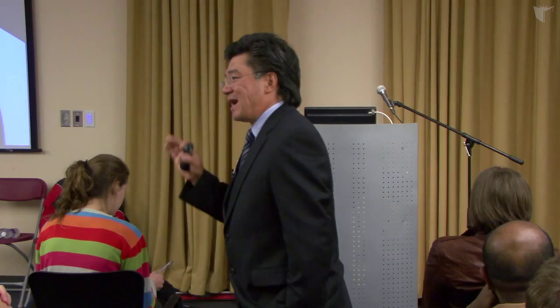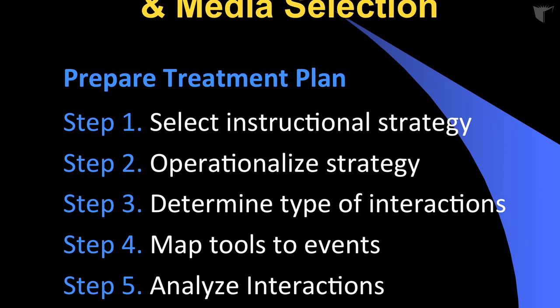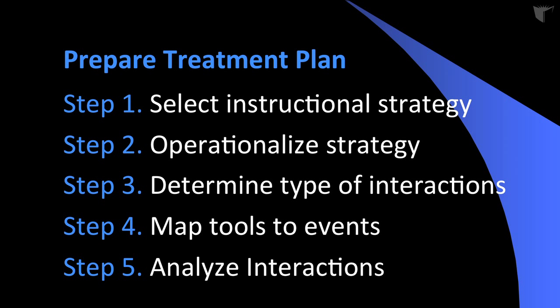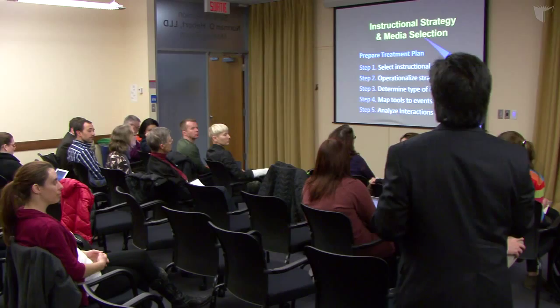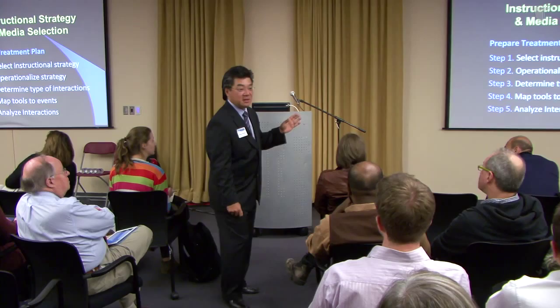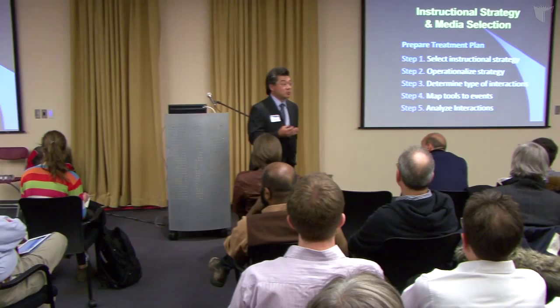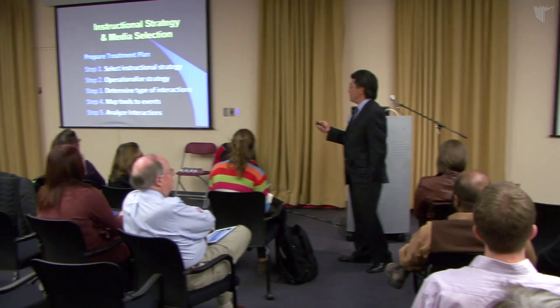I've broken the strategy process down to five steps, assuming you've already defined your objectives and assessments. With practice and experience, you might do all five at once or the first four simultaneously. I've just broken it into steps to facilitate this lecture and the workshops I give. Once you become more knowledgeable about design, it all happens at once. Let's start with this question: what is the difference between information — reading a book, going to a movie, listening to music — and going to class? What is the difference between what you do as an educator and what a book author might do?